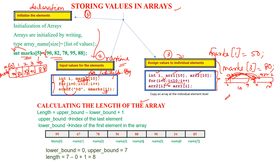Those are the three methods for storing values in an array. Now, calculating the length of the array: if the index runs from 0 to 7, the length is 8; if from 0 to 9, the length is 10. You can also calculate it directly using the formula: length equals upper bound minus lower bound plus 1.